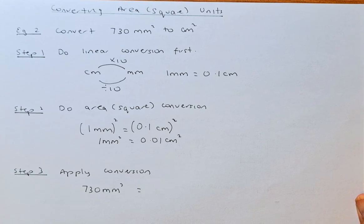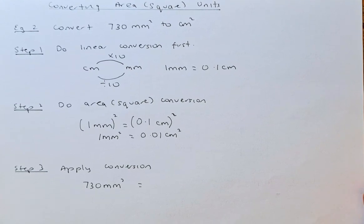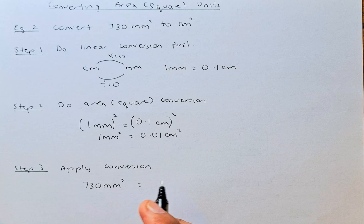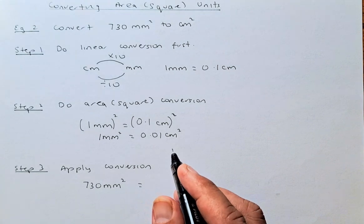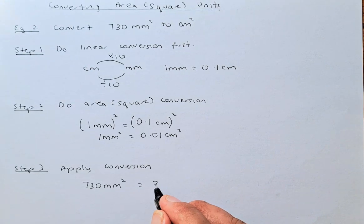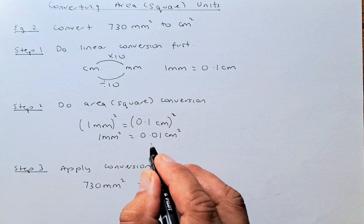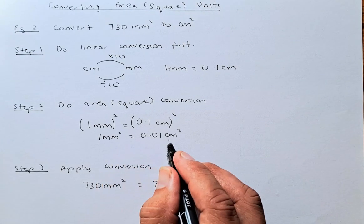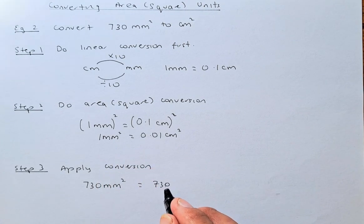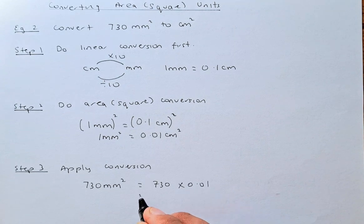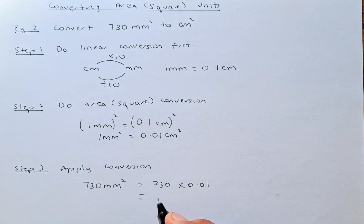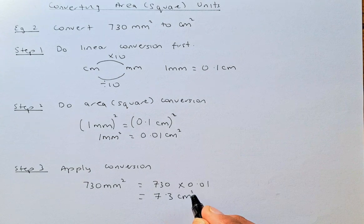The last step, you have to apply the conversion. You have 730 millimeter squared, and you want to convert them into centimeter squared. You multiply 730 by 0.01, because 1 millimeter squared is 0.01 centimeter squared. So 730 multiplied by 0.01 gives you an answer of 7.3 centimeter squared.